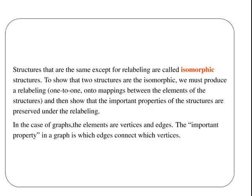Structures, as in graphs, that are the same except for labeling, are called isomorphic structures. Iso essentially gives is the same as, and morphic means shape. So, the same shape.